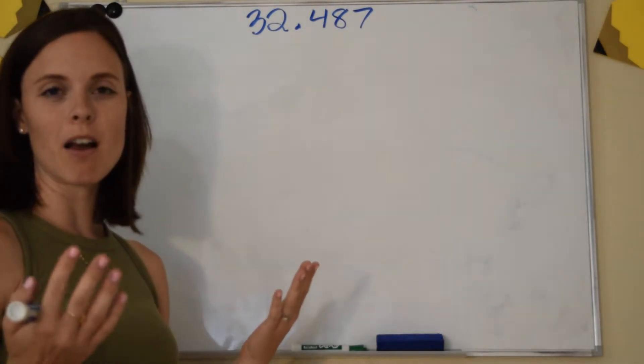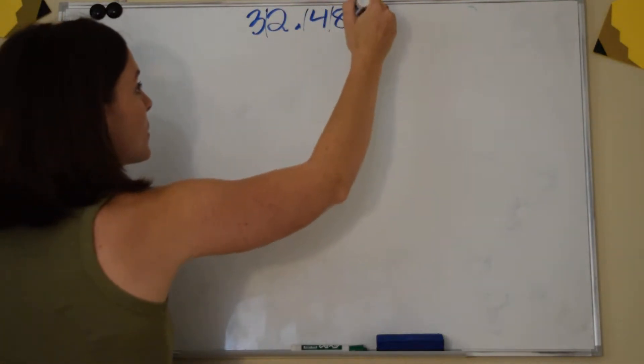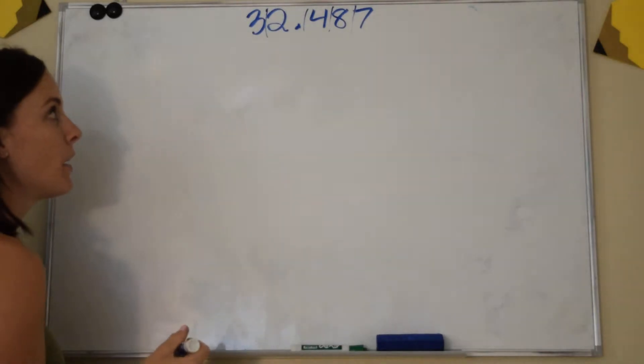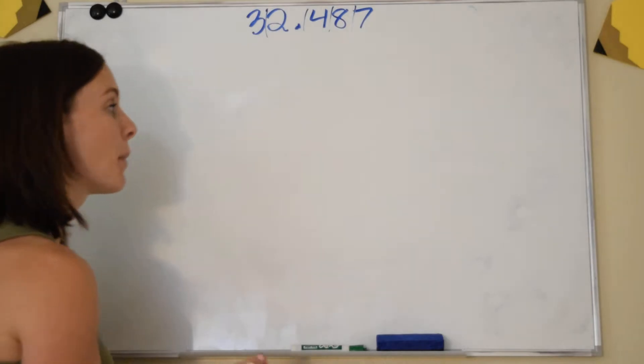Remember I relate it to a parking lot. What parking spot is each of these numbers sitting in? They each get their own and they're each called a specific name because it has a specific value.